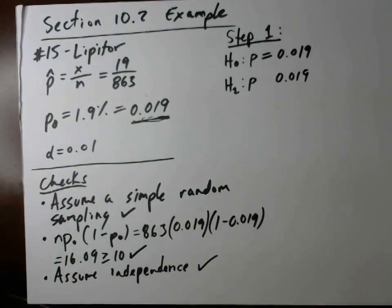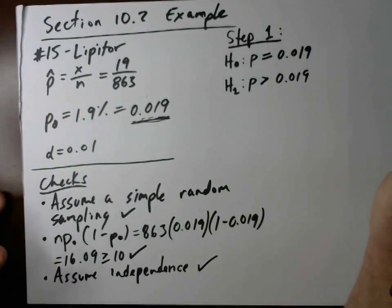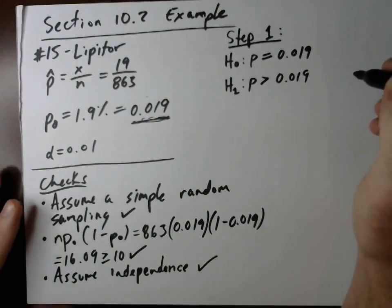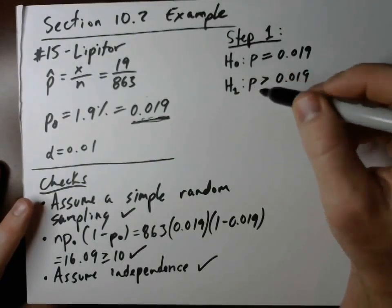Now we just need to figure out the inequality. It's based off of the wording of the claimed result. So it mentions here, is there evidence to conclude that more than 1.9% of Lipitor users experience flu-like symptoms? So it mentions more. So since it mentions more, we put greater than. More. Greater. That gives us our alternative inequality in our alternative hypothesis.